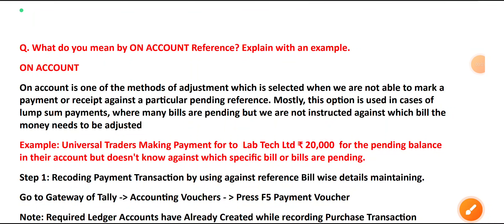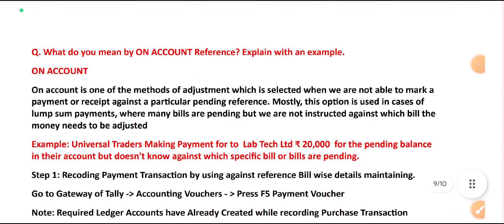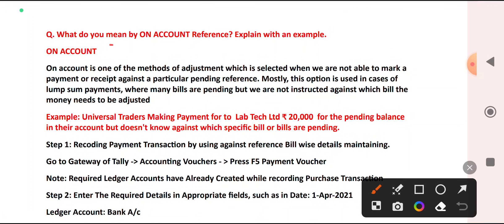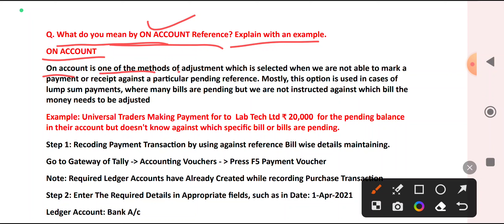Namaste to all dear Warrior Science students. Here we are going to study about On Account Reference. On Account is one of the methods of adjustment, which is selected when we are not able to mark a payment or receipt against a particular pending reference.